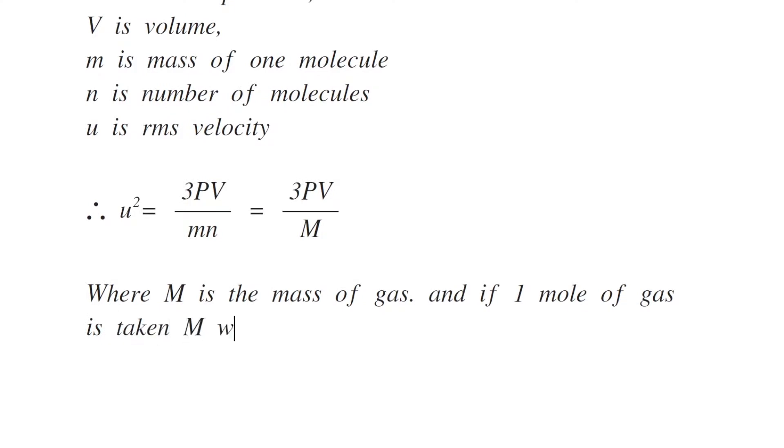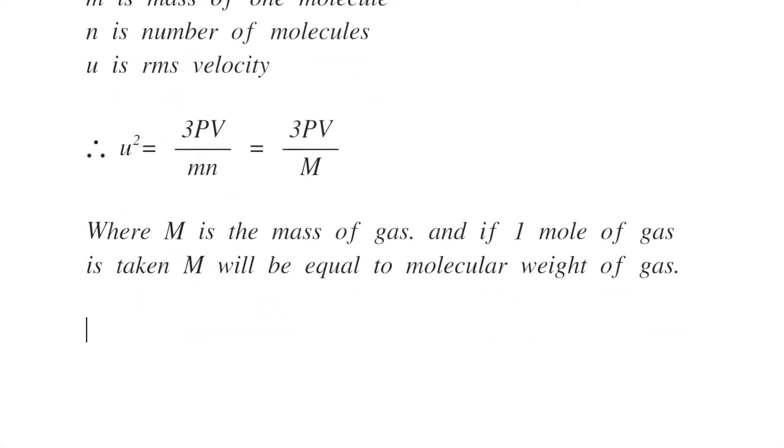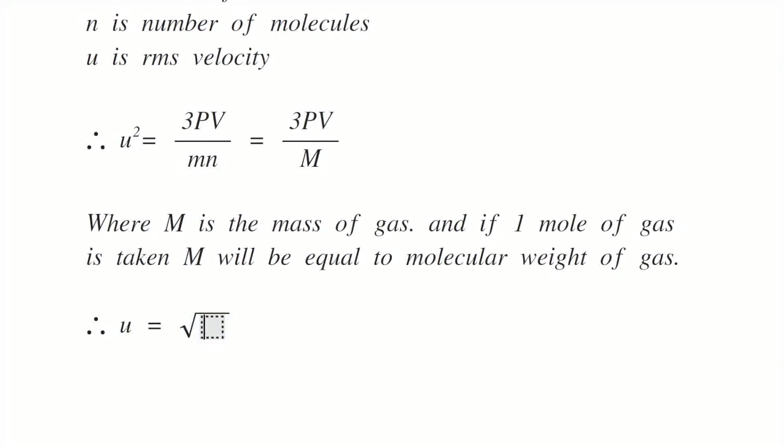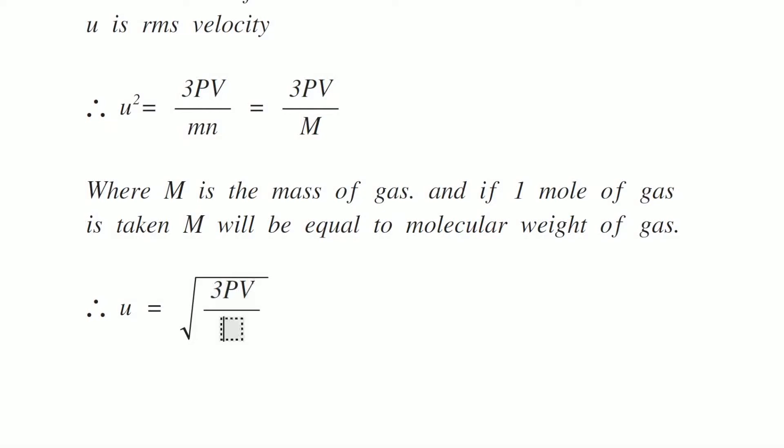And if one mole of gas is taken, then M will be equal to the molecular weight of the gas. Therefore, U becomes square root of 3 PV by M. This is equation number 1.